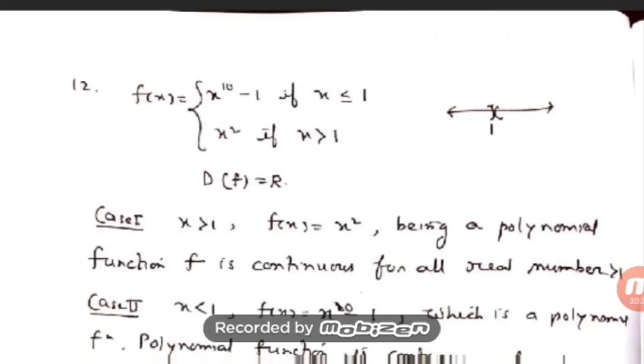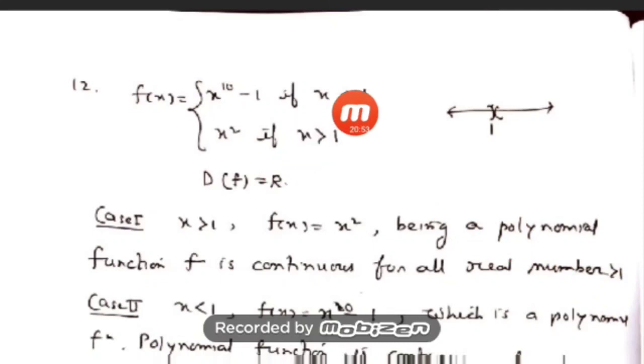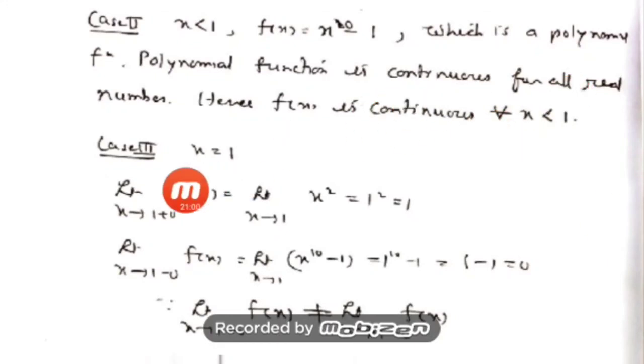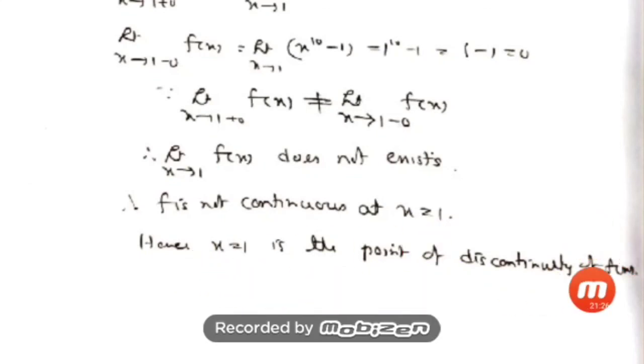Question 12: the critical point is 1. For x > 1, f(x) = x², a polynomial — continuous. For x < 1, f(x) = x¹⁰ − 1, also a polynomial — continuous. At x = 1: the right-hand limit is 1² = 1, and the left-hand limit is 1¹⁰ − 1 = 0. Since 1 ≠ 0, the limit does not exist, so f is not continuous at x = 1. Therefore x = 1 is the point of discontinuity.